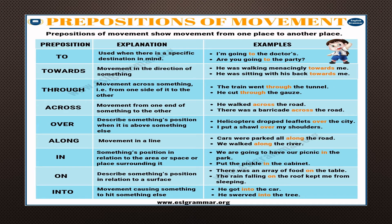Over is a preposition that shows the position of something when it is above something else: I put a shawl over my shoulders. Along shows movement in a line: we walked along the river. In shows something's position in relation to an enclosed surrounding area or space: we are going to have our picnic in the park; put the pickle in the cabinet. On describes something's position in relation to a surface: there was an array of food on the table. Into shows movement causing something to hit something else: he got into the car; he swerved into the tree.